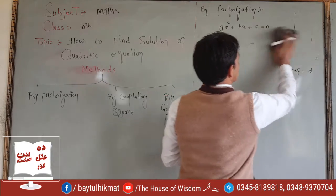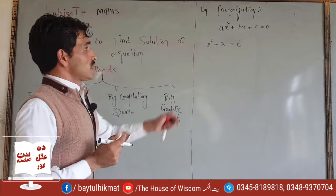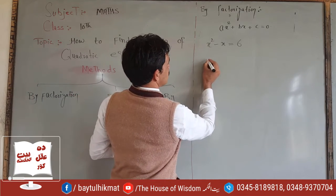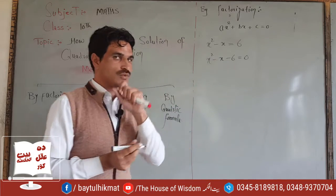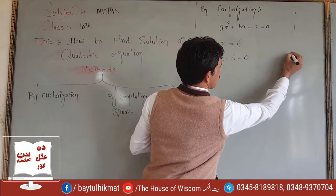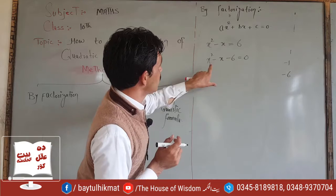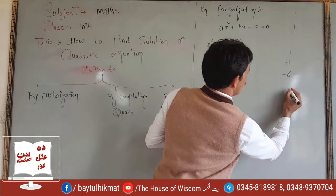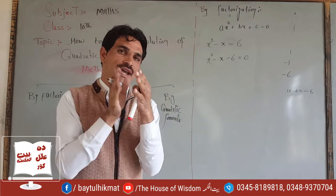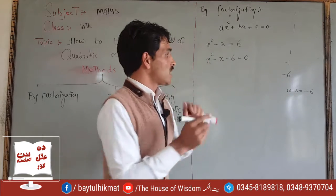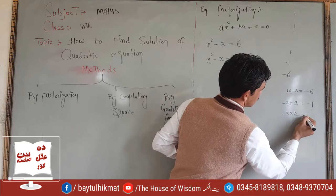For example: x squared minus x minus 6 equals zero. This is already in the standard form of a quadratic equation. The x squared coefficient is 1, the x coefficient is minus 1, and the constant number is minus 6. We multiply 1 by minus 6 to get minus 6. We need two numbers: minus 3 and plus 2, since minus 3 plus 2 equals minus 1 and minus 3 multiplied by 2 equals minus 6.